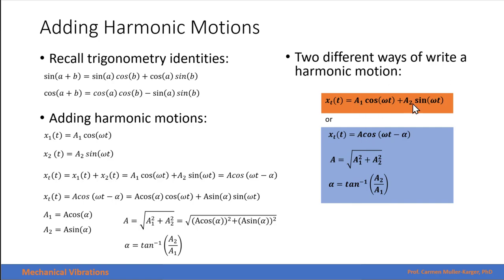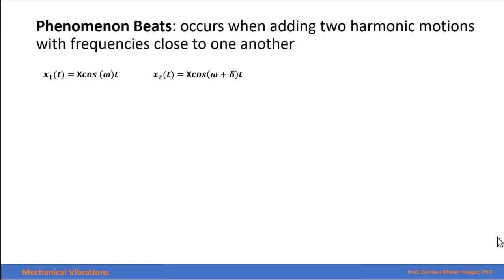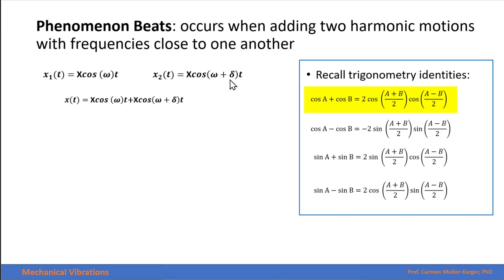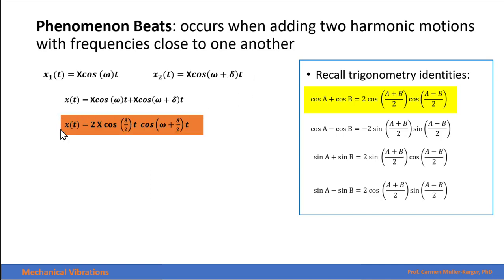The phenomenon of beats occurs when adding two harmonic motions with frequencies close to one another. Here we have the first harmonic motion with frequency omega, and the second with frequency omega plus delta, where delta is very small. Recalling the trigonometric sum-to-product identity, we get a term with (2 omega plus delta)/2 and a term with delta/2, yielding the beat expression.